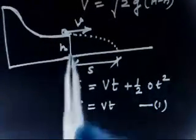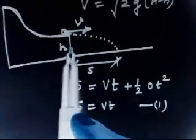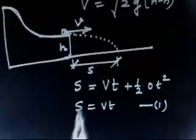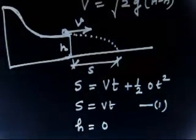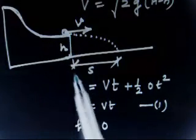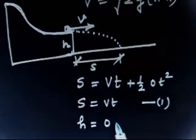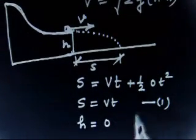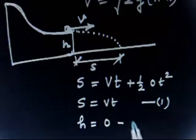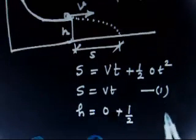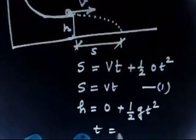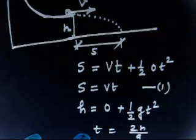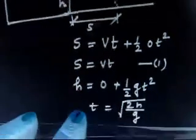Now writing the equation in the vertical direction: taking downward as positive, distance is h, initial vertical velocity is zero. So h equals ½g·T². From here, T equals the square root of 2h/g.